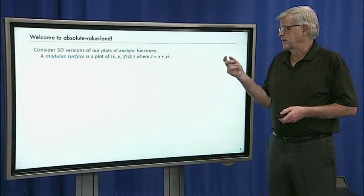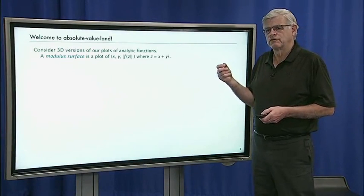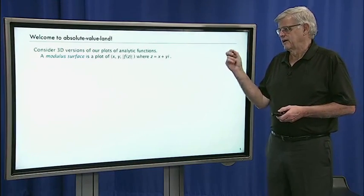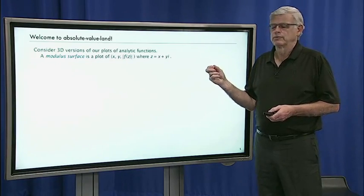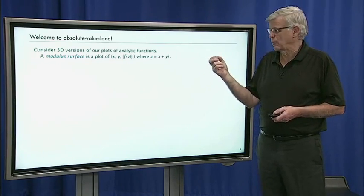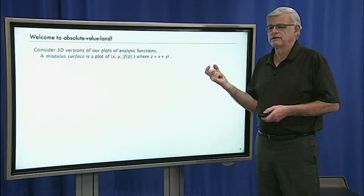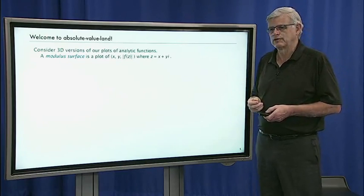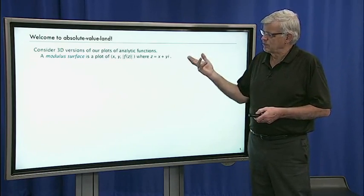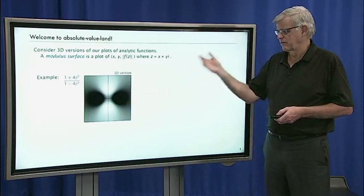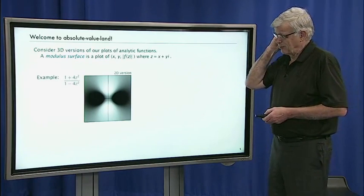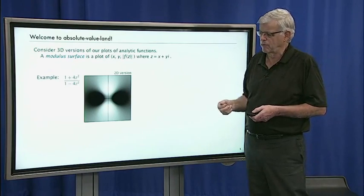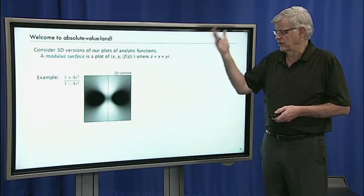Now what we want to do is look at three-dimensional versions of the plots of analytic functions that we've been working with. Those things are called modulus surfaces, which is a plot of x, y, and the absolute value of some function, where x and y are points in the Cartesian plane corresponding to x + yi. We've been using plots like this to help identify poles and understand the topography of complex functions already.